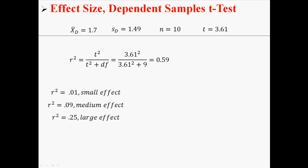So I put those in there, and I find an R squared of 0.59, and it's just like Cohen's D. If you have 0.01, you have a small effect. If you have 0.09, you have a medium effect. And if you have 0.25, you have a large effect. In this case, 0.59 indicates a large effect. So just like we found with Cohen's D, it means that our means are likely very different.